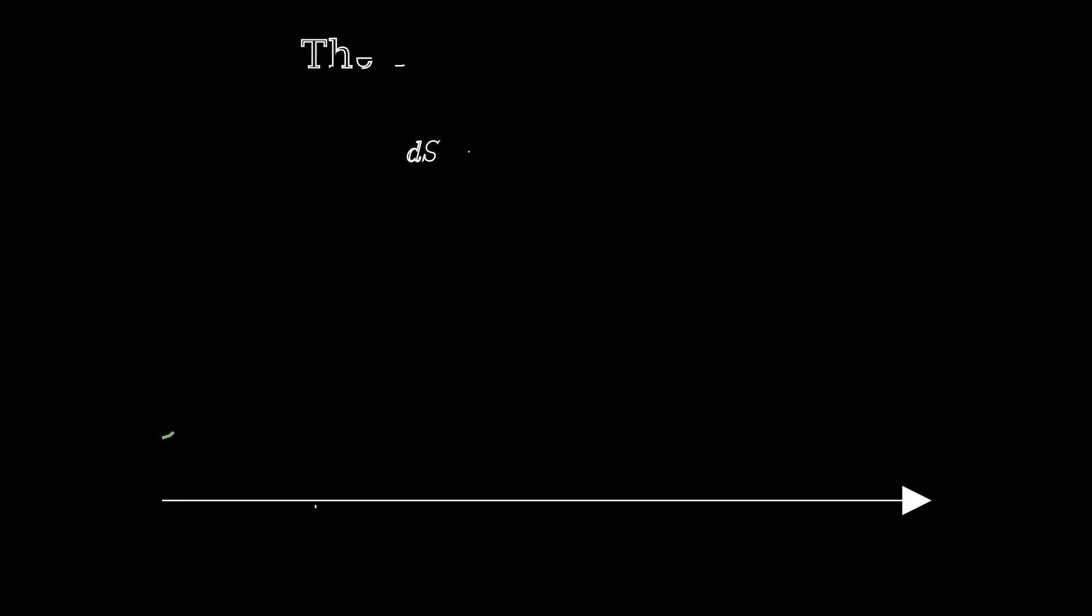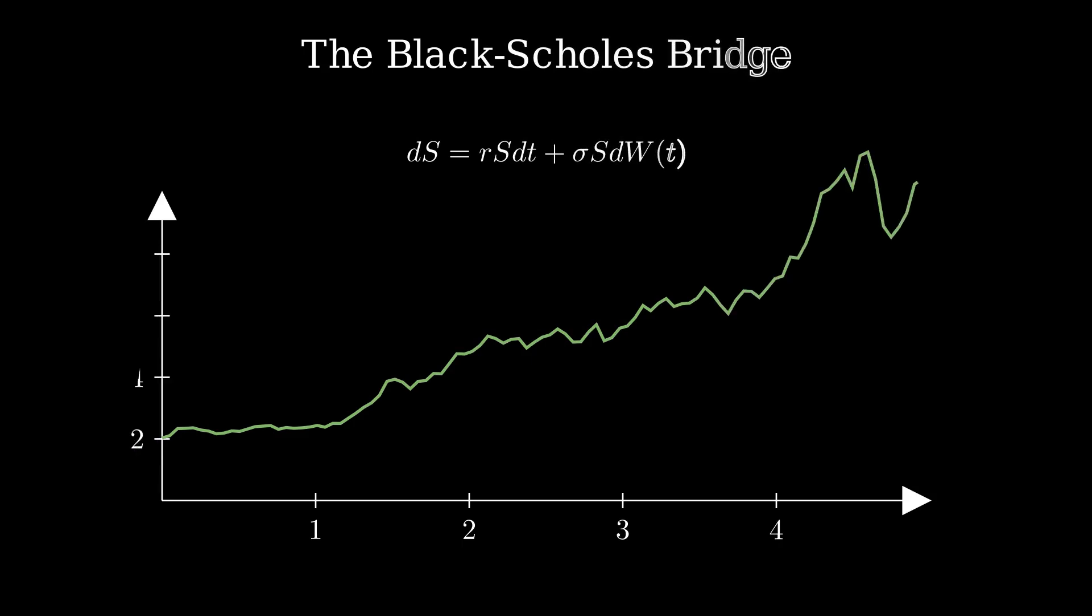In Black-Scholes, we tweak the drift. Set it to the risk-free rate: dS equals rSdt plus σSdW(t).